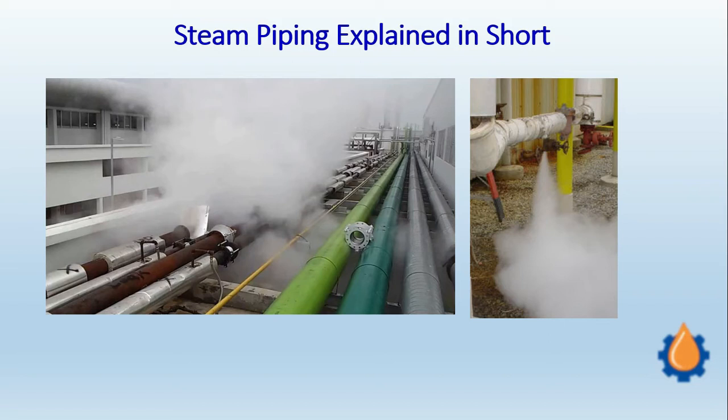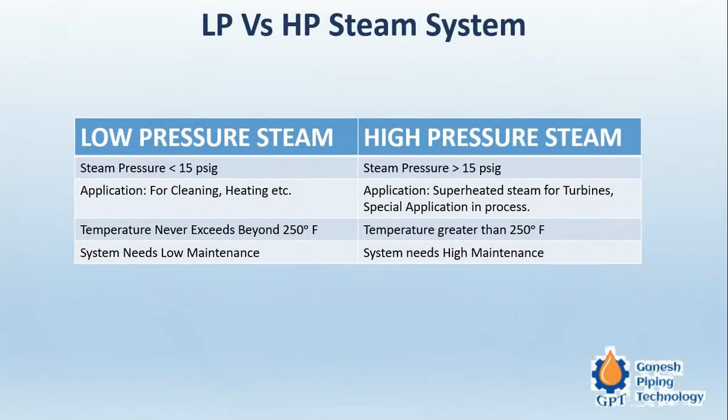This video is dedicated to steam piping. Before starting, we will understand why steam is used. Basically there are a variety of applications for which steam is required in industry. The most important can be categorized into two: one where steam is used for power generation, in which case it is high pressure and superheated steam; and other normal applications such as cleaning or as a heating medium in a process.